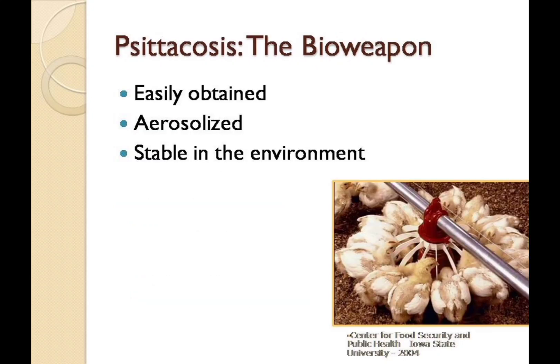Chlamydophila psittaci has previously been part of several countries' bioweapons research programs. Some characteristics that make it a good potential bioweapon include its stability in the environment, ease of aerosolization, and ease to obtain due to worldwide occurrence.